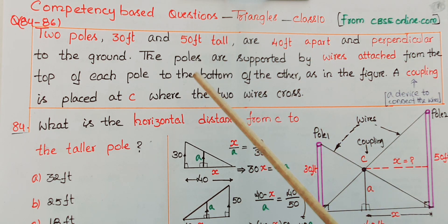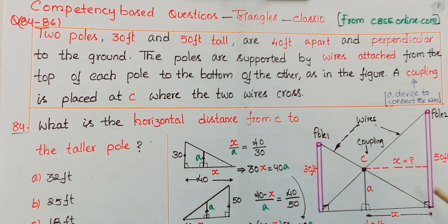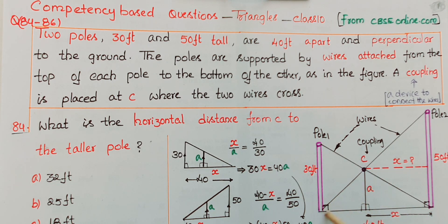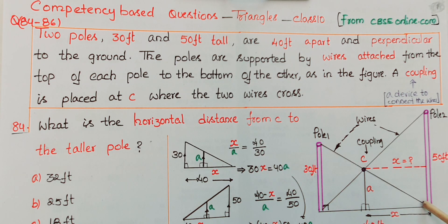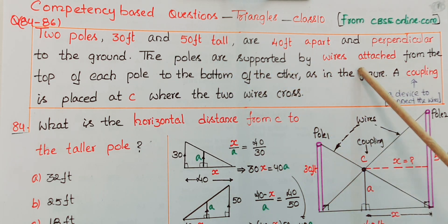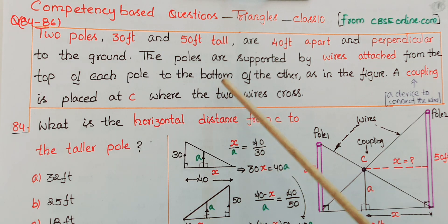The first pole height is 30 feet, the second pole height is 50 feet, and the distance between the two poles is 40 feet. These two poles are perpendicular to the ground, so these angles are 90 degrees.